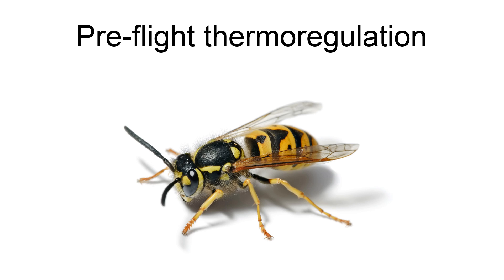During flight, these function as antagonistic muscles to produce the wing flapping that allows for sustained flight. However, during warmup these muscles are contracted simultaneously, or almost simultaneously in some insects, to produce no wing movement, or a minimal amount of wing movement, and produce as much heat as possible to elevate thoracic temperatures to flight levels.